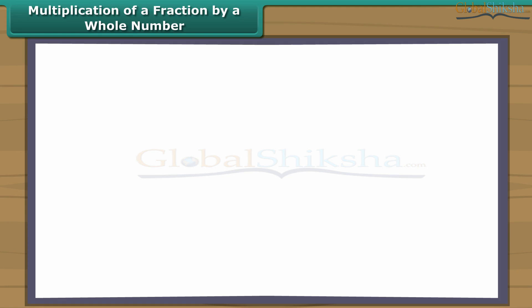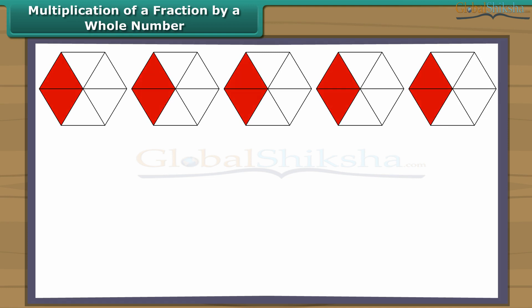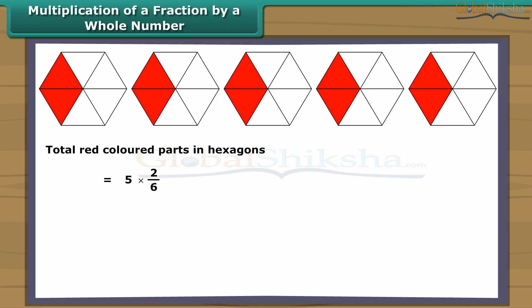Multiplication of a fraction by a whole number. Look at these hexagons and find out the total red-colored part. Two-sixths of each hexagon is red-colored. Thus in total we have ten-sixths part red-colored. We can also find this by multiplying five by two-sixths. To multiply a whole number with a proper or improper fraction, multiply the whole number by the numerator, keeping the denominator the same.